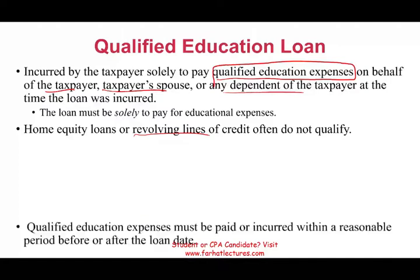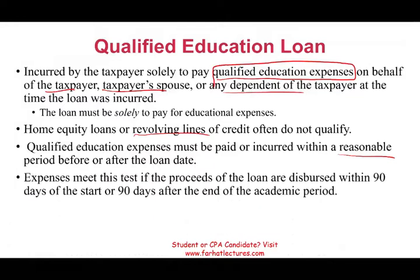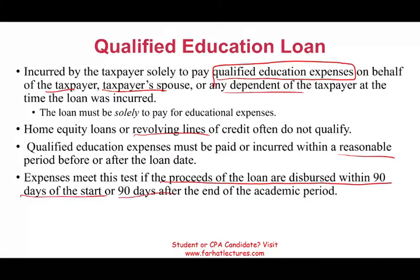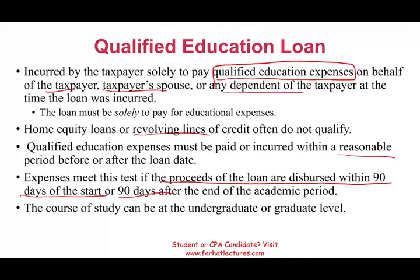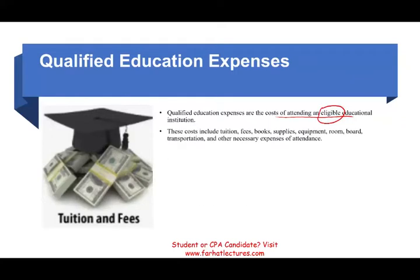Qualified education expenses must be paid or incurred within a reasonable period of time on or after the loan date — usually there's a 90-day test. Proceeds of the loan must be disbursed within 90 days of the start of the academic year or 90 days after. The course of study can be graduate or undergraduate. What are qualified educational expenses? Cost of attending an eligible institution — tuition, fees, books, supplies, equipment, room and board, transportation, or other necessary expenses of attendance.